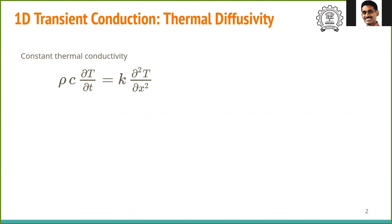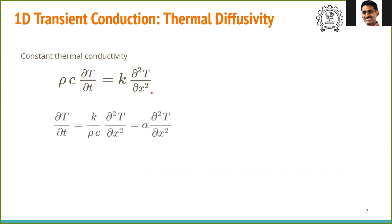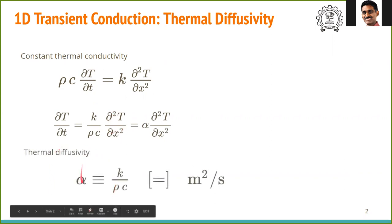In the case of constant thermal conductivity, k can be pulled out and we have ρc ∂T/∂t = k ∇²T. Rearranging, we get ∂T/∂t = (k/ρc) ∇²T. The term k/ρc is called the thermal diffusivity, with units of m²/s, which you can quickly check.